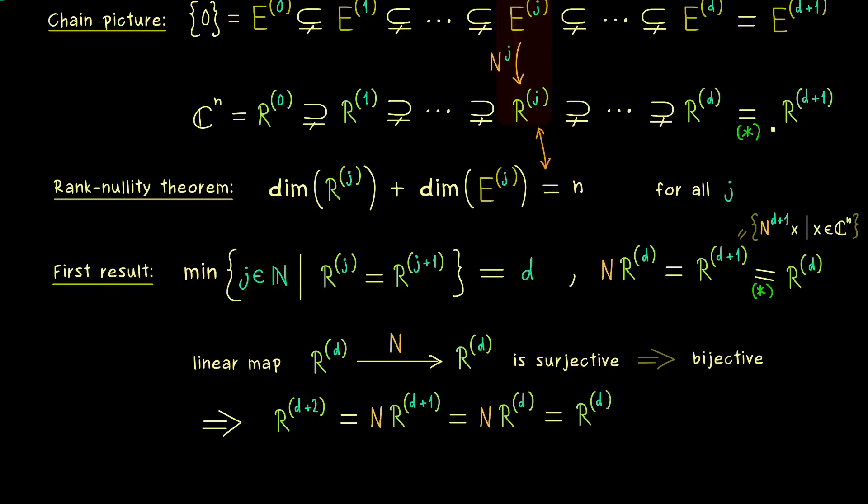Therefore, in the next step of the chain, we still have an equality. And there you should see, we can just go further and further in the chain, and we still have an equality. Hence, inductively, we get the equality for every j we add to d. And obviously this is a really nice result, because it tells us that the fitting index is the index where the chain stays stable.